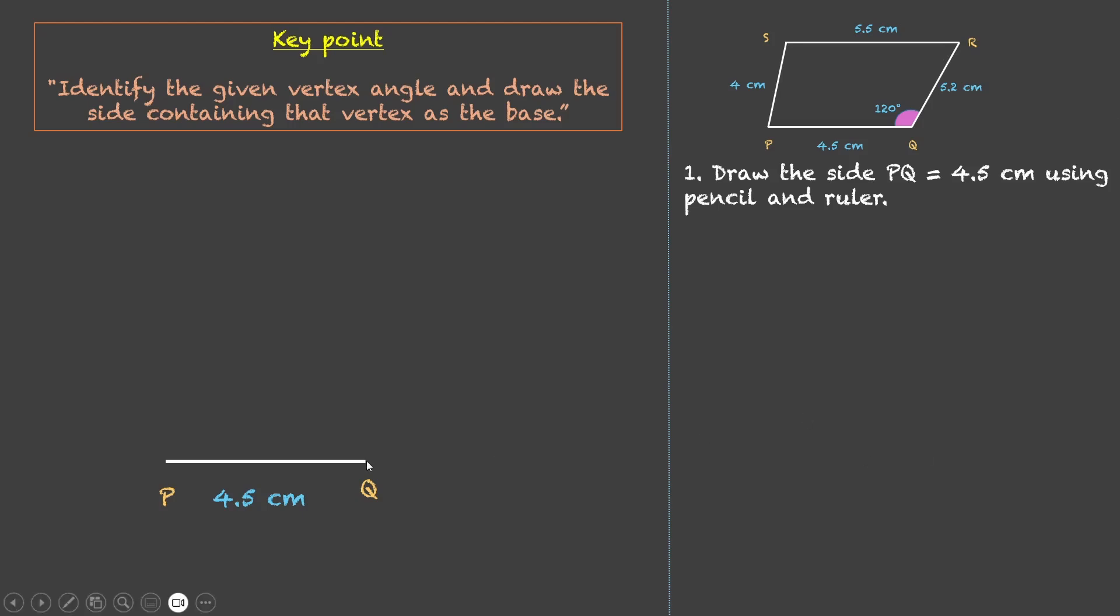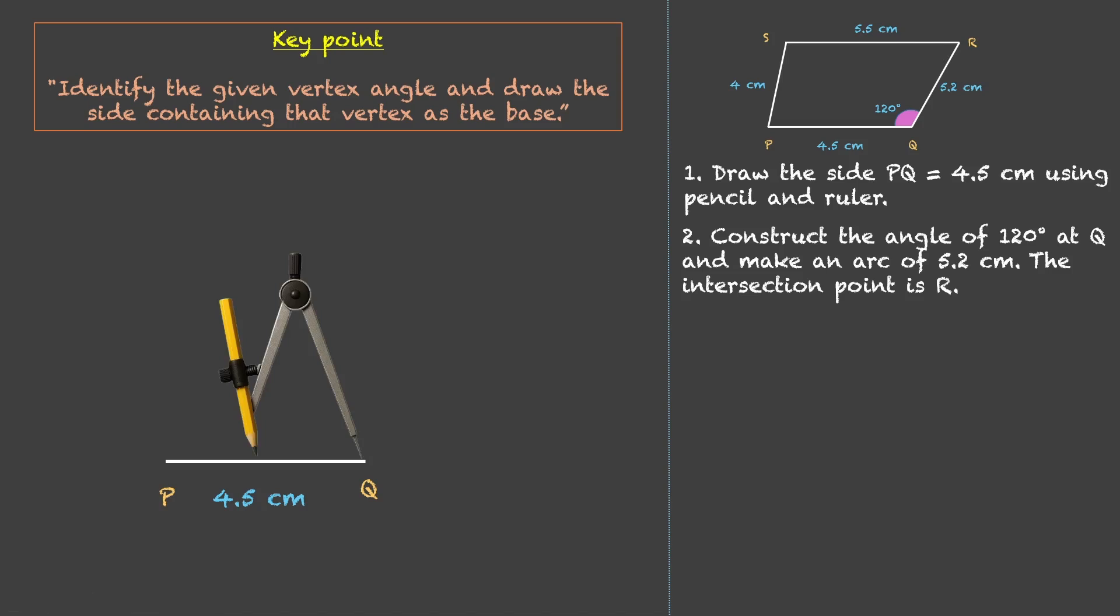Now we need to draw or construct an angle over here. So we'll construct an angle of 120 degrees at Q and then make an arc of 5.2 cm and that point would become R. So let's keep our compass needle at Q. And in order to draw an angle, we first need to draw a big arc like this.